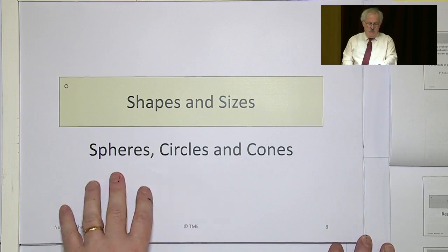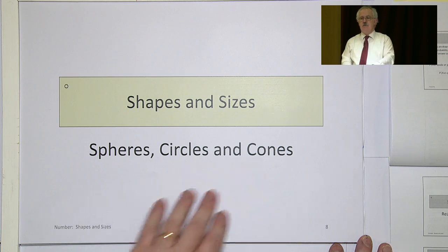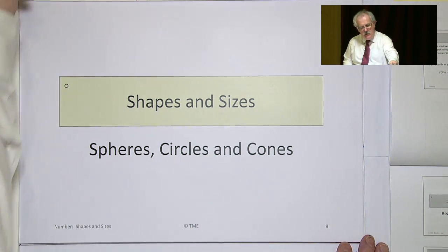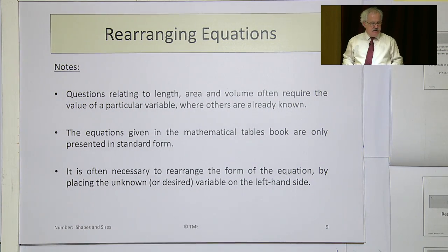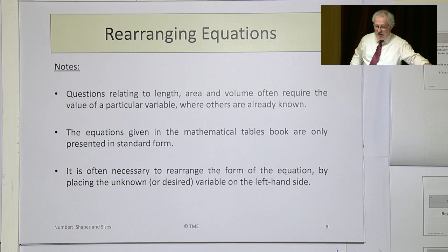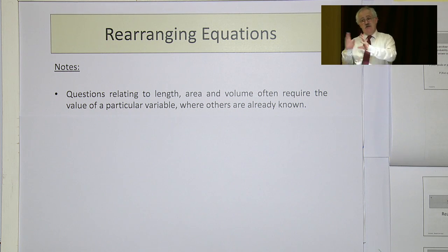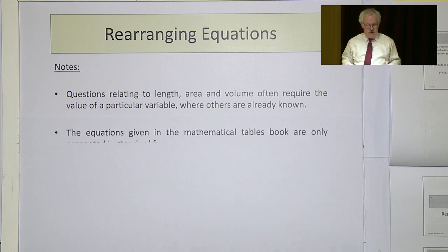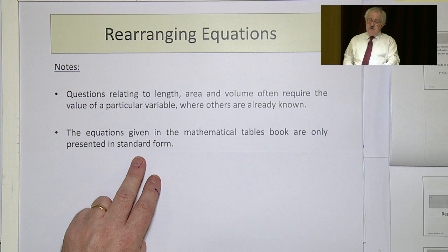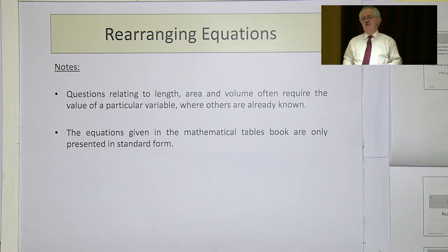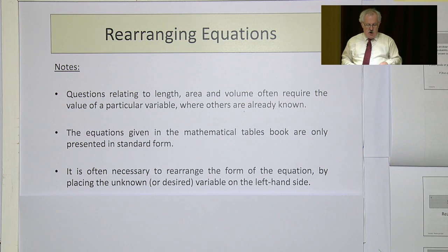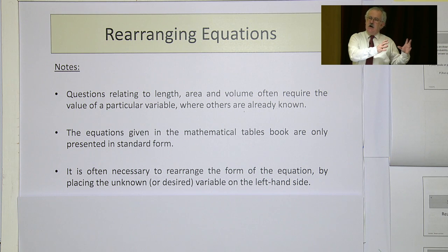We'll now move and look at spheres, circles and cones. A note here on rearranging equations: questions related to length, area and volume often require you to find the value of a particular variable, but they'll give you all the others. The equations in the tables are written in one particular standard way and it's often necessary to rearrange that form, so the desired variable is on the left hand side, not on the right.